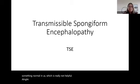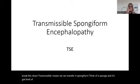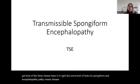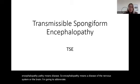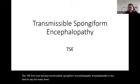Prions cause a disease called transmissible spongiform encephalopathy. Transmissible means we can transfer it; spongiform refers to sponge-like holes in the tissue, like Swiss cheese; and encephalopathy means a disease of the nervous system or brain. I'll abbreviate this TSE from now on, because transmissible spongiform encephalopathy is too hard to say too many times.